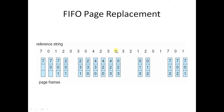Now we move to 0 — 0 is not there, so 0 is moved into the first FIFO position. Now we move to 3; 3 is already present, so it will be a hit. Move to 2; 2 is already present, so it will again be a hit. Now we move to 1; 1 is not present here, and we have just replaced at this position, so the next FIFO position follows — 2 is removed out and 1 is entered. Now we move to 2; since 1 has just been entered, 3 will be removed out and 2 will be entered. So the current frame is 0, 1, 2.